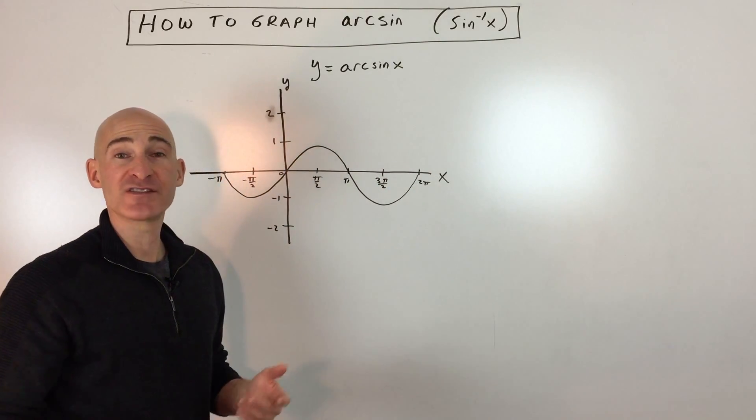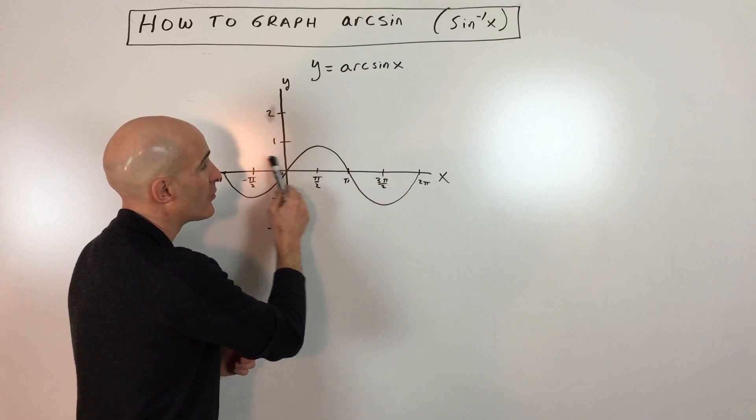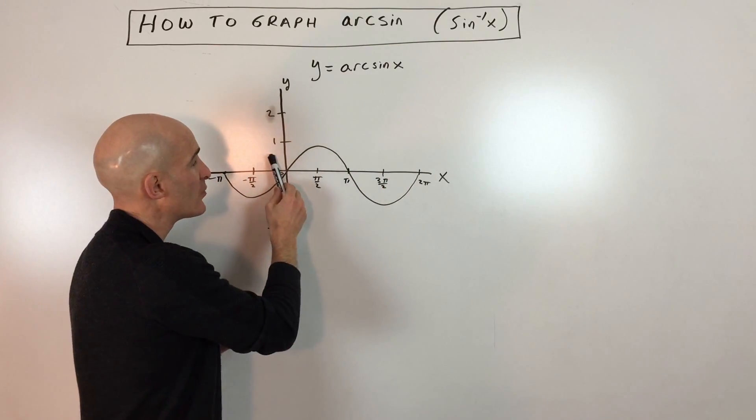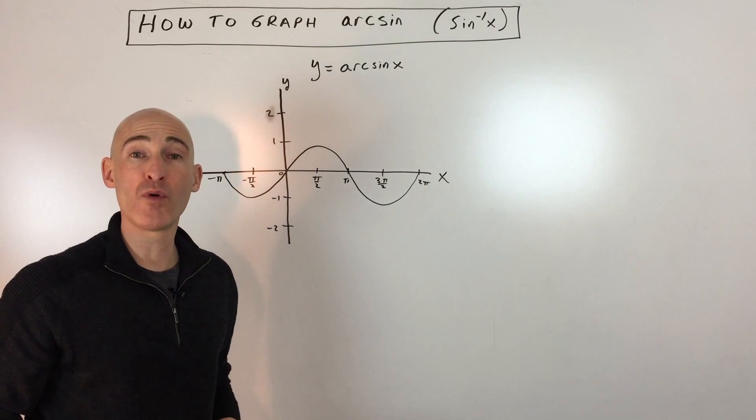The inverse of this graph is not a function. You can see that it's failing the horizontal line test, meaning that when you draw a horizontal line, it's crossing the graph at more than one point.